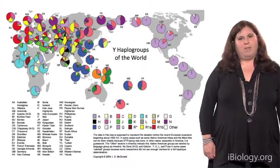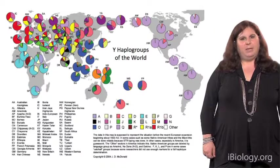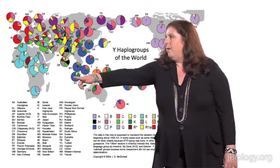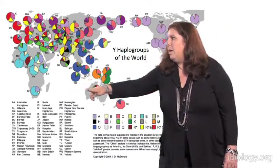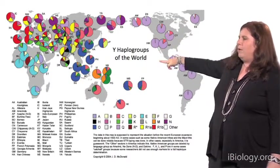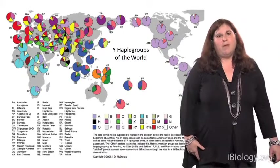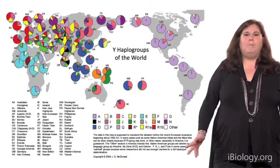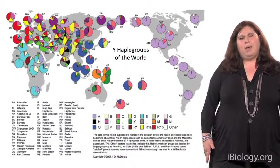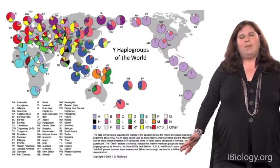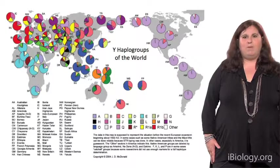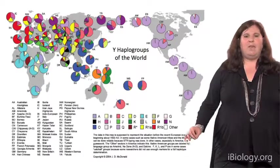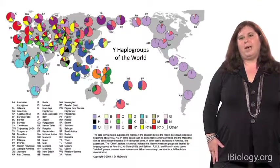We can also look at Y chromosome haplogroups, and one thing that's a bit different is that they're more differentiated between geographic regions — for example, very distinct haplogroups in the Americas shown in purple. One reason for that may be sex-biased migration, where one male traveling long distances can have an outsized effect. It may also relate to mating structure: in some populations, one male may have many wives, so the effective population size of the Y chromosome is actually smaller than that of mitochondrial DNA, leading to more genetic differentiation around the world.